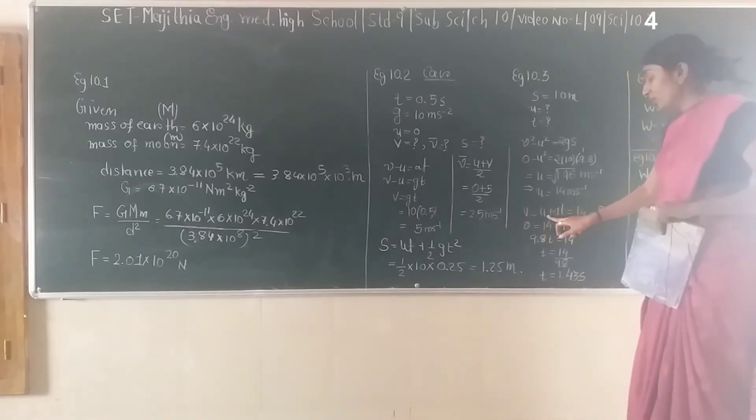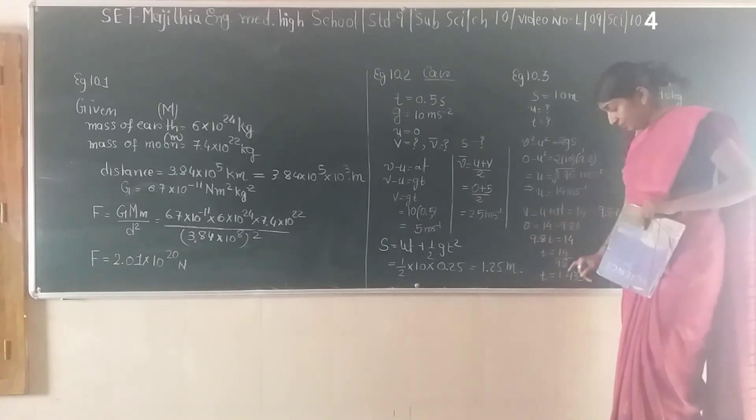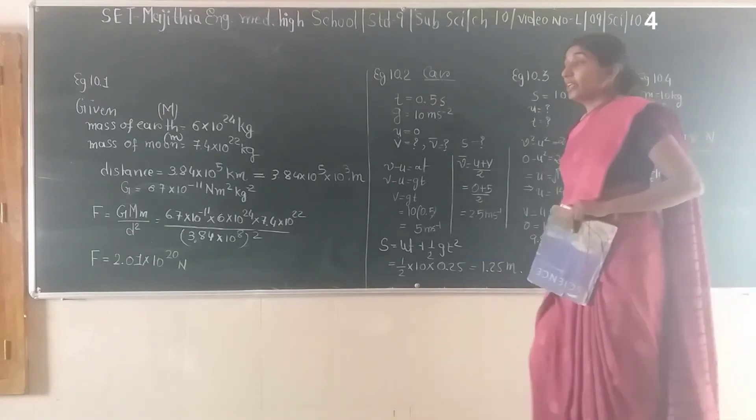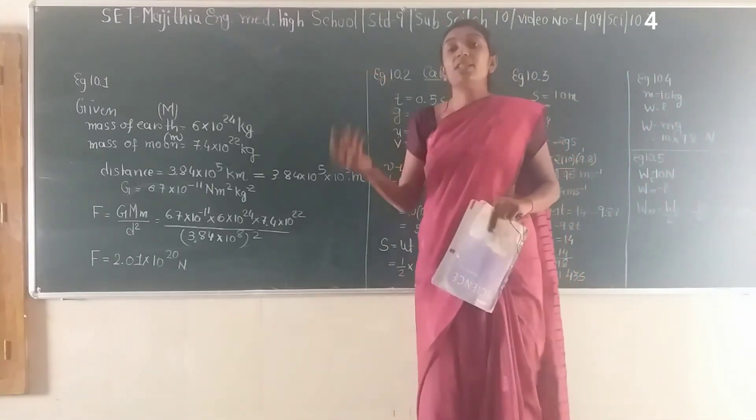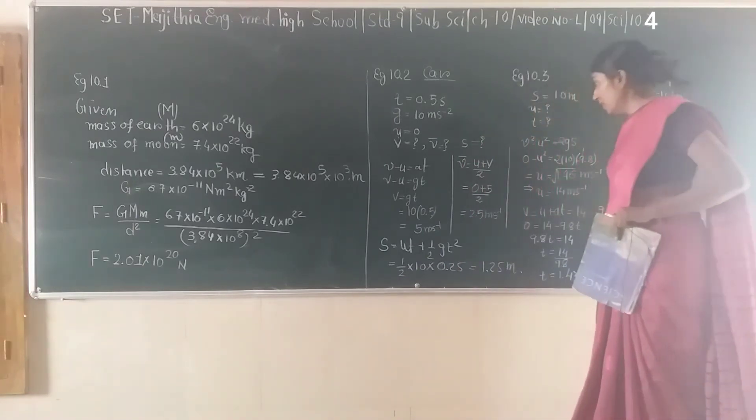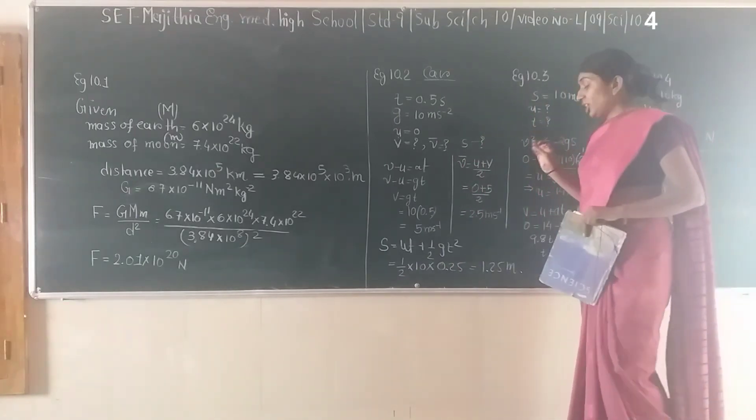Using v = u + at, we substitute the values and get the time taken, which is 1.43 seconds. So it takes 1.43 seconds for the object to reach that height.